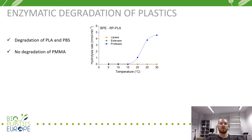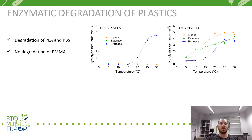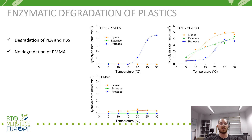Polybutylene succinate, or PBS, was best hydrolyzed by a lipase, but also by esterase and protease. The hydrolysis rate for lipase was highest between 20 and 30 degrees Celsius. The conventional petroleum-based polymethylmethacrylate, or PMMA, showed extremely low or no hydrolysis by any of the enzymes.